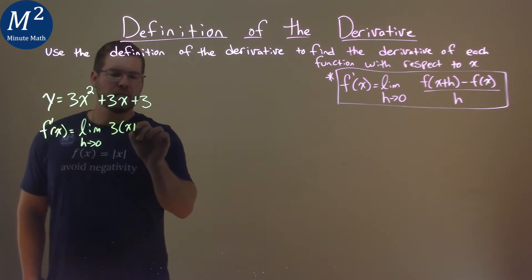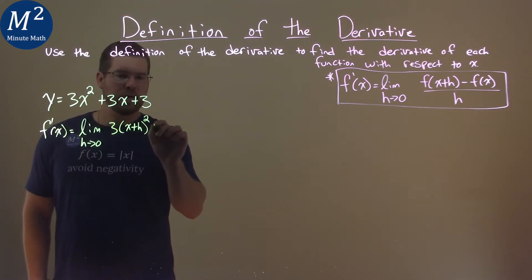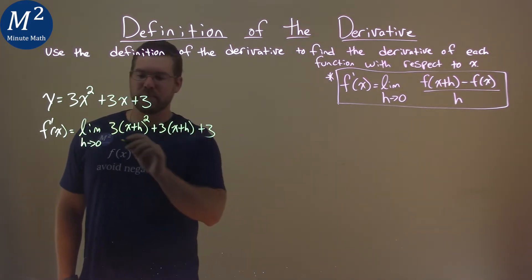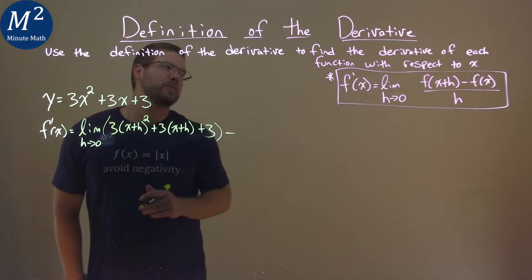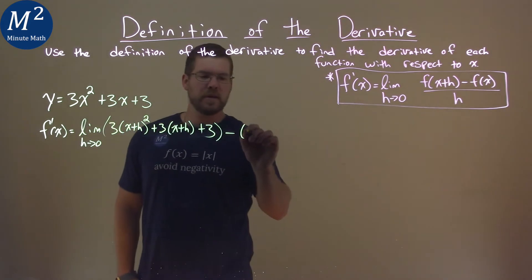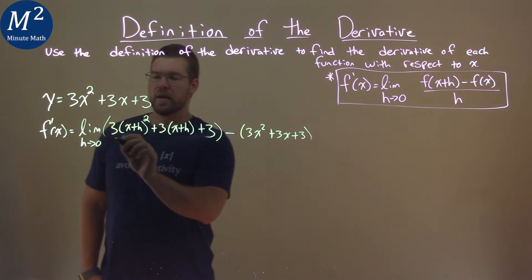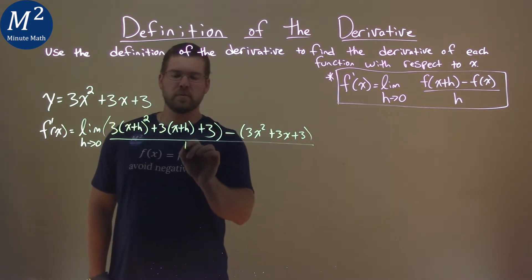So we have 3 times (x plus h) squared, plus 3 times (x plus h), plus 3. Line of 3's. Now we subtract our original function: 3x squared plus 3x plus 3. And all of that goes over the lonely h.